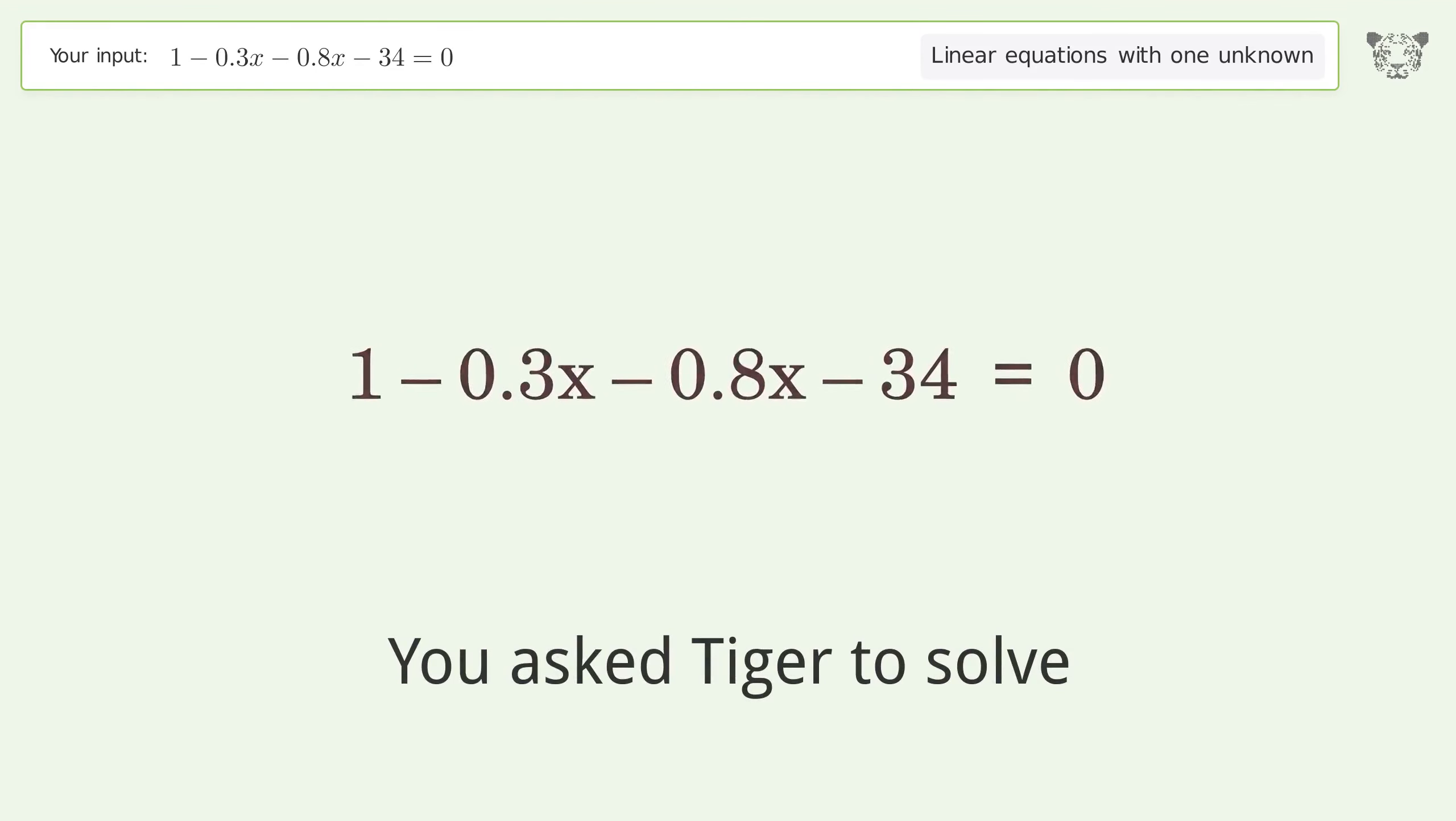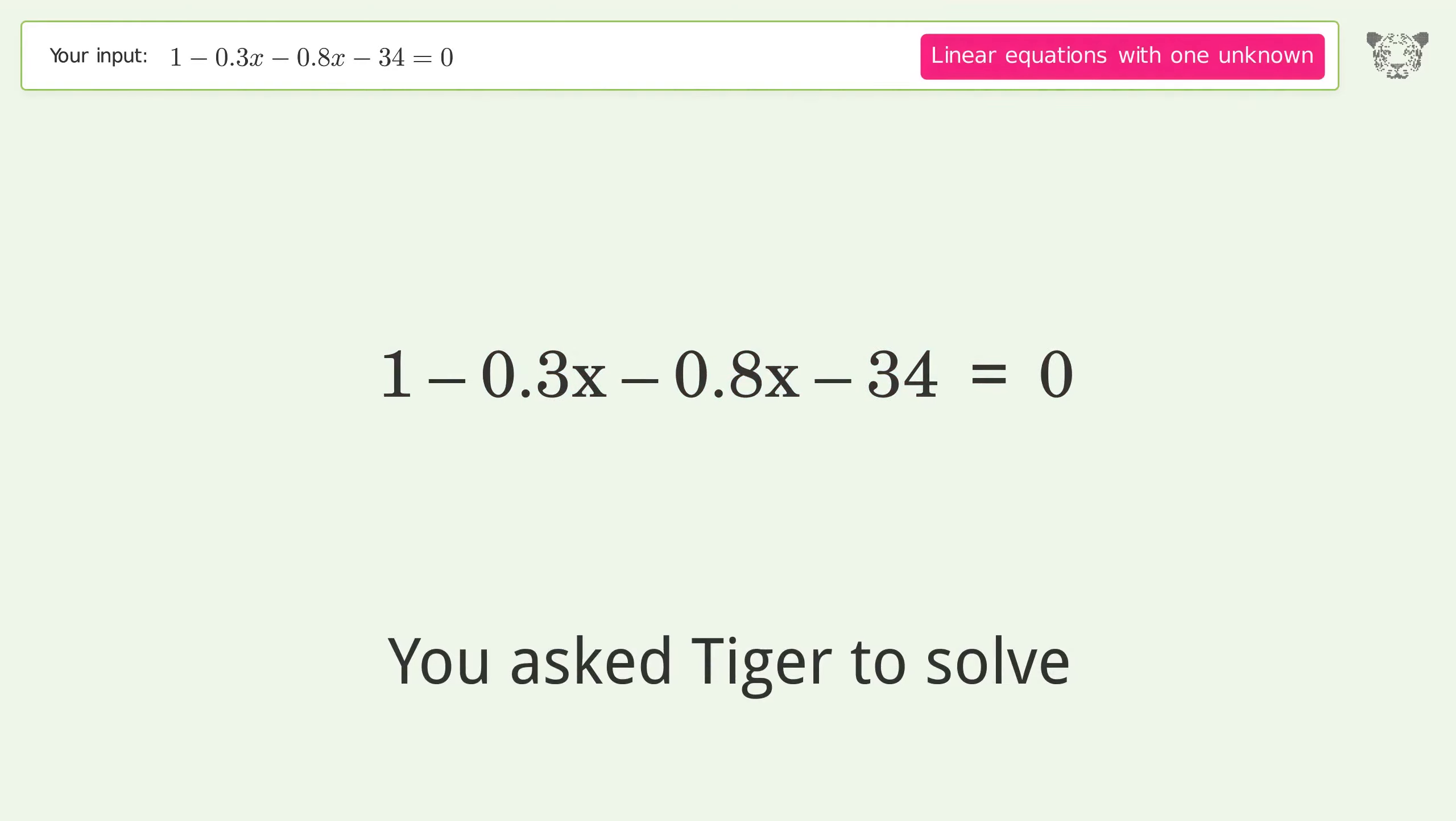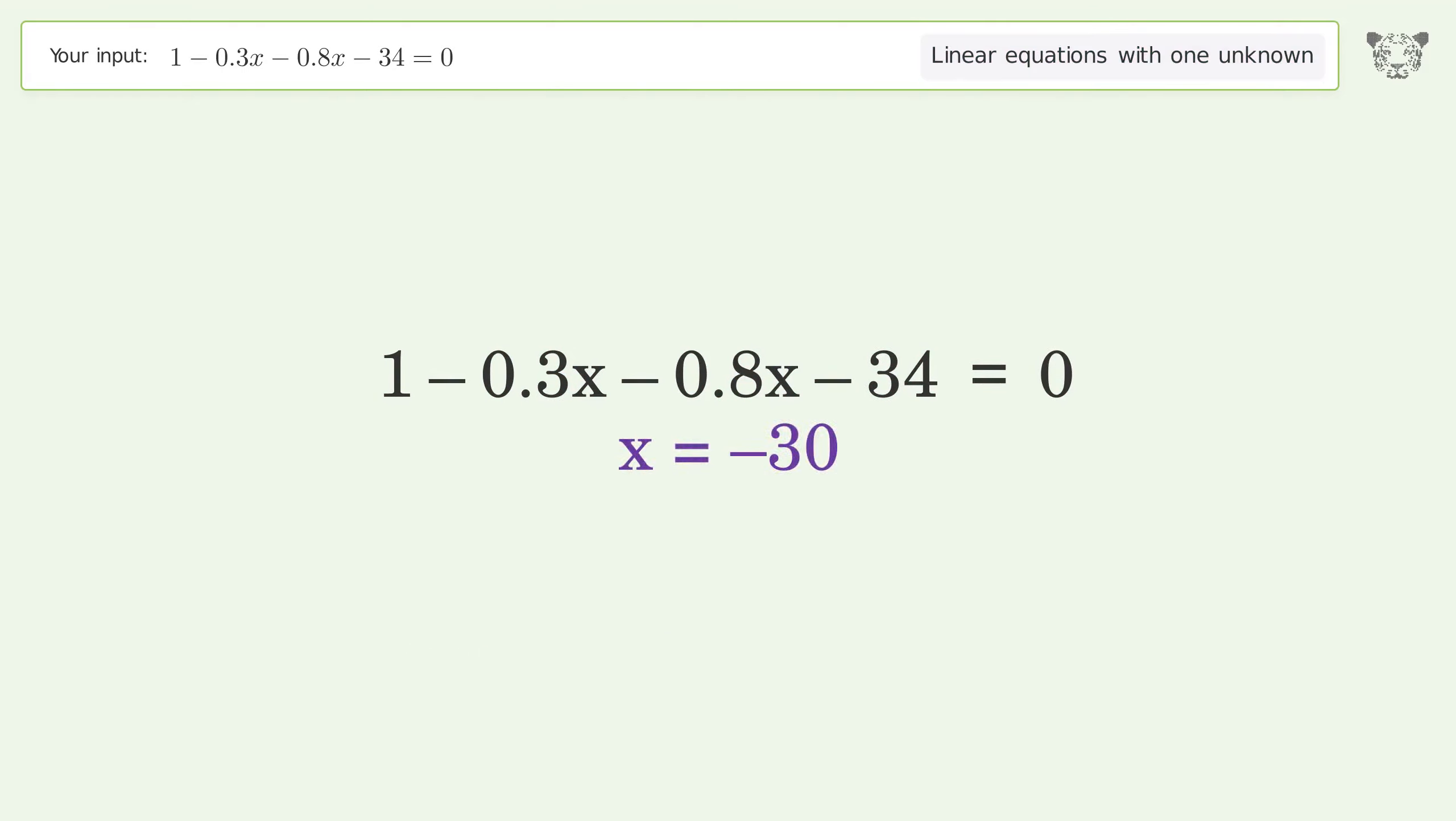You ask Tiger to solve this. It deals with linear equations with one unknown. The final result is x equals negative 30.